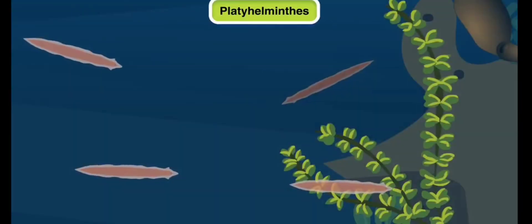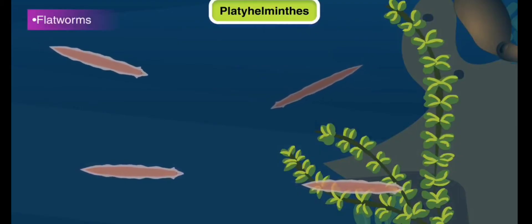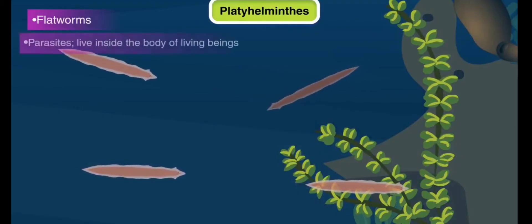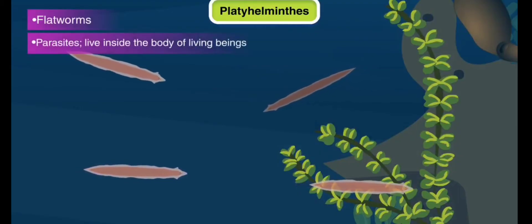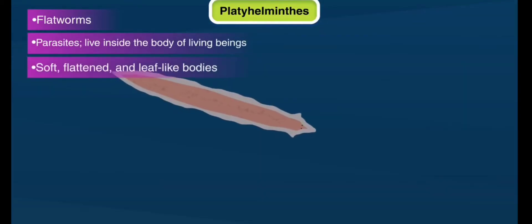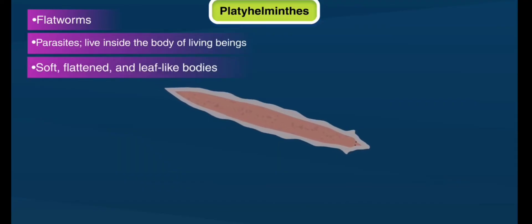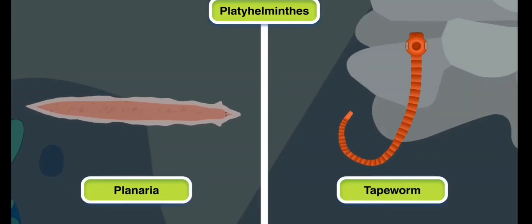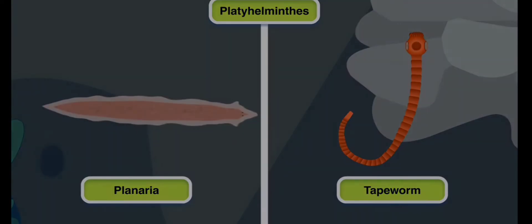Phylum Platyhelminthes: This is a group of flatworms that live inside the body of living beings as parasites. They have soft, flattened, and leaf-like or ribbon-like bodies. Planaria and tapeworm are examples of flatworms.